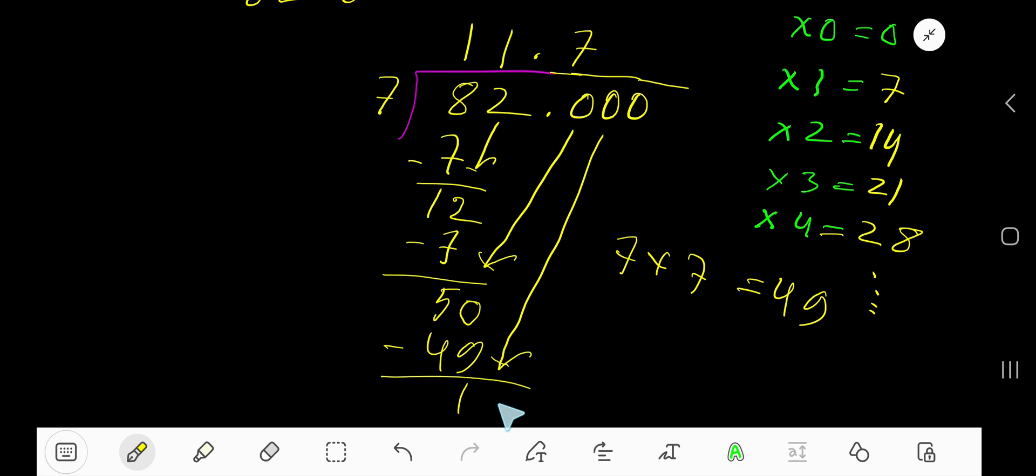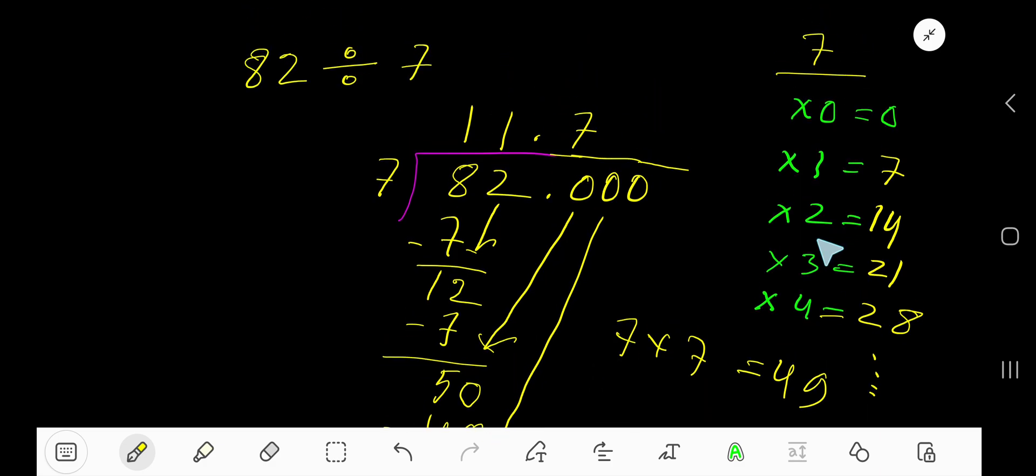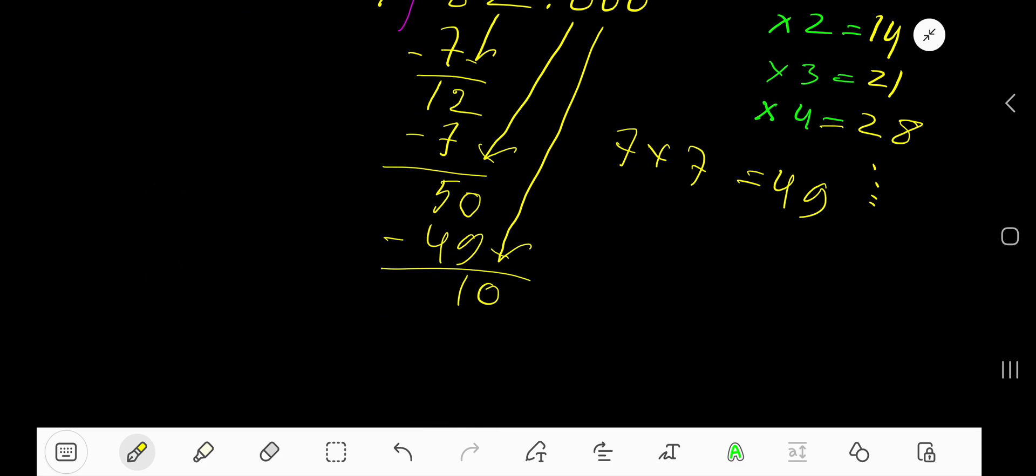Bring down the next zero, so you are getting 10. 7 goes into 10 how many times? 1 time. 1 times 7 is 7. If you subtract, you are getting 3. Bring down the next 0.